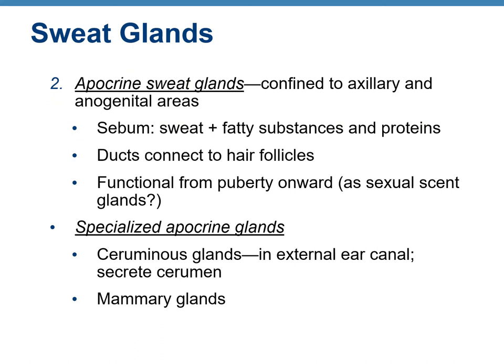Apocrine sweat glands are confined to the axillary and anogenital areas. They secrete sebum — sweat mixed with fatty substances and proteins — through ducts into hair follicles. They are functional from puberty onwards. Specialized apocrine glands include mammary glands and ceruminous glands, which are found in the external ear canal and secrete cerumen. Both ceruminous and mammary glands are modified apocrine sweat glands.